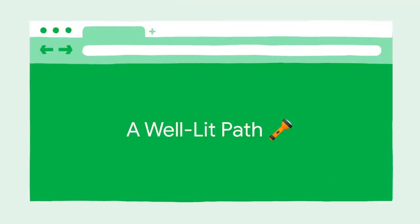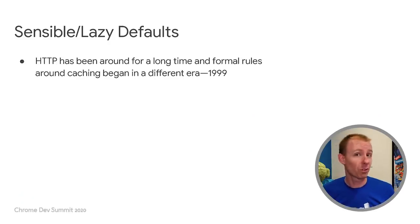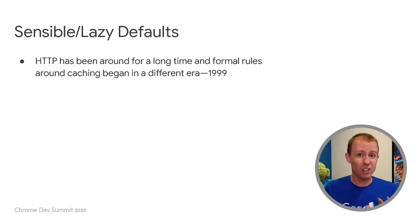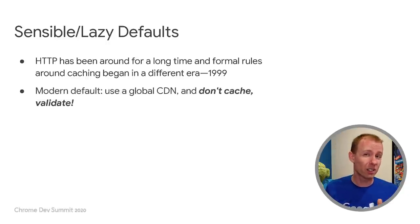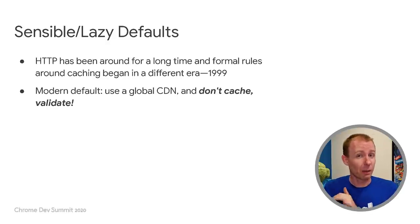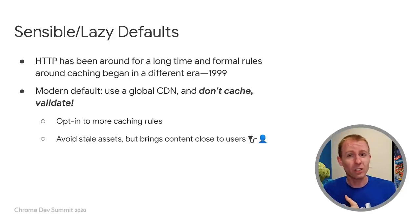Let's go back to that well-lit path and the modern sensible default for caching. HTTP has been around a long time — that Last-Modified default behavior was introduced around 1999, and browsers still don't implement it correctly. It's time for an update. To restate our goal: we oddly want to disable caching by default, and just validate that resources are up to date via ETags. Then introduce more caching rules while bringing your content close to users via CDNs.